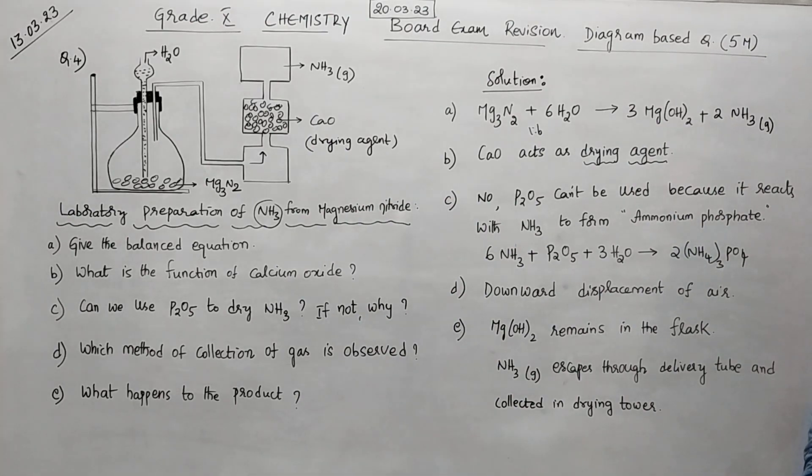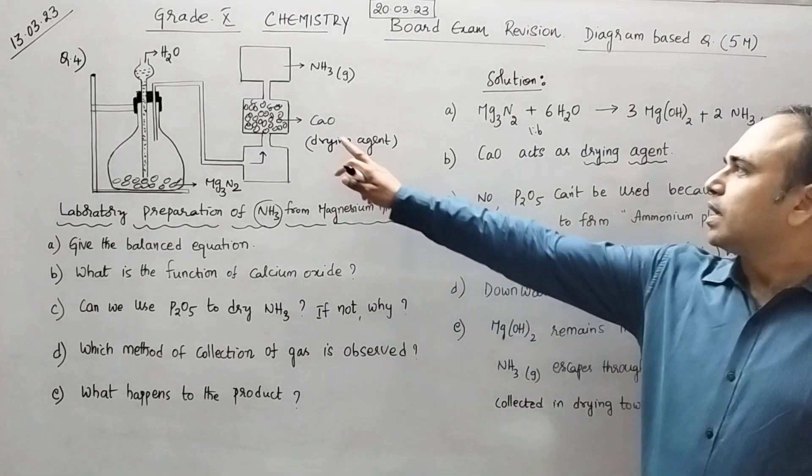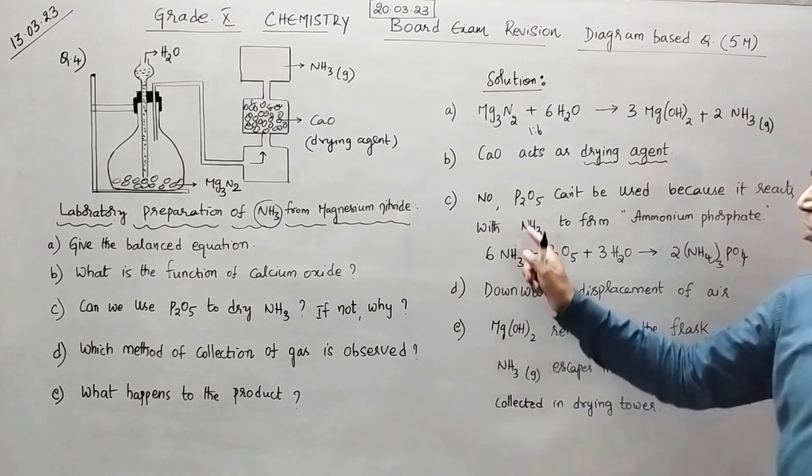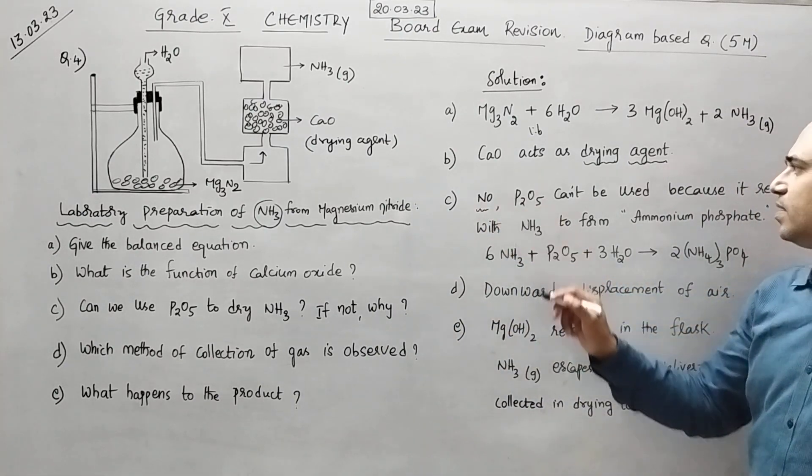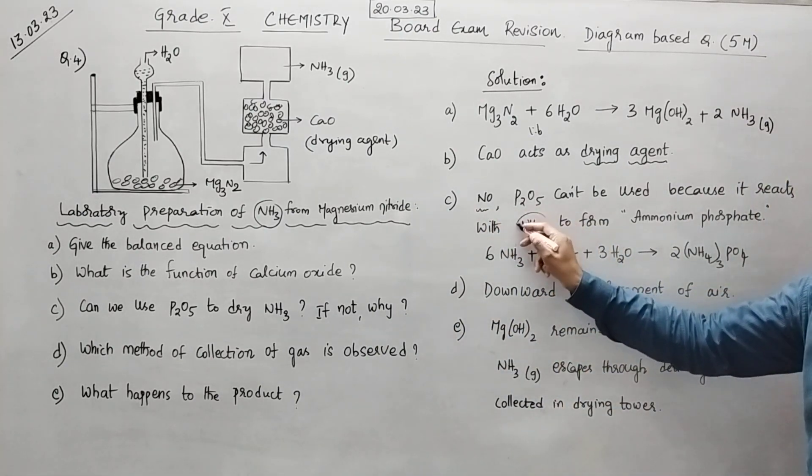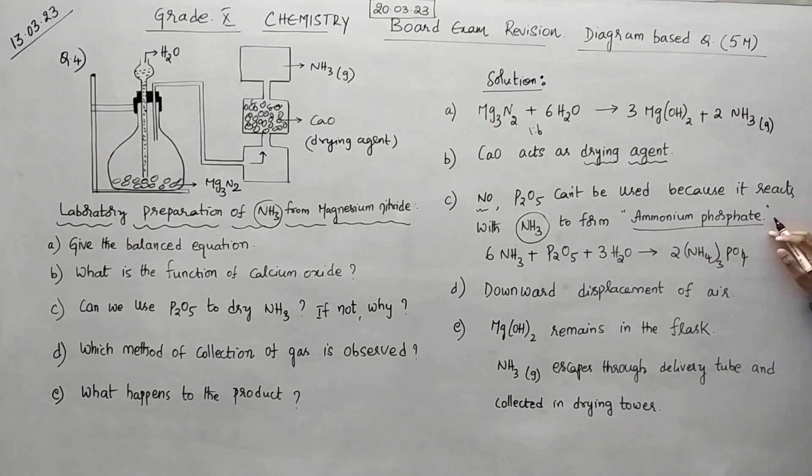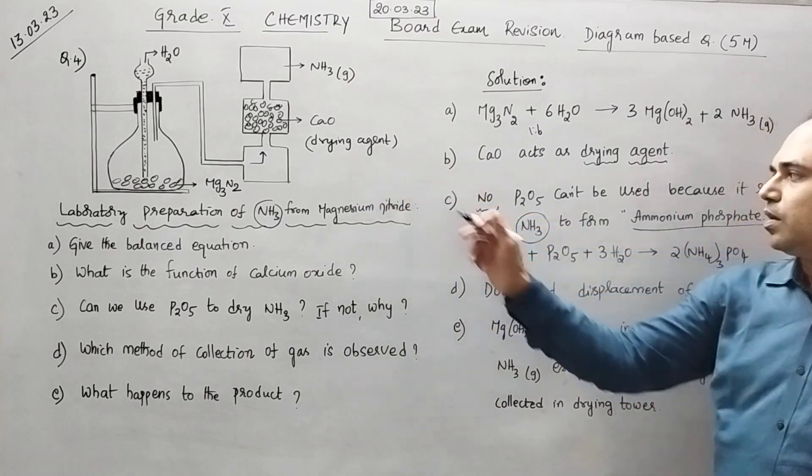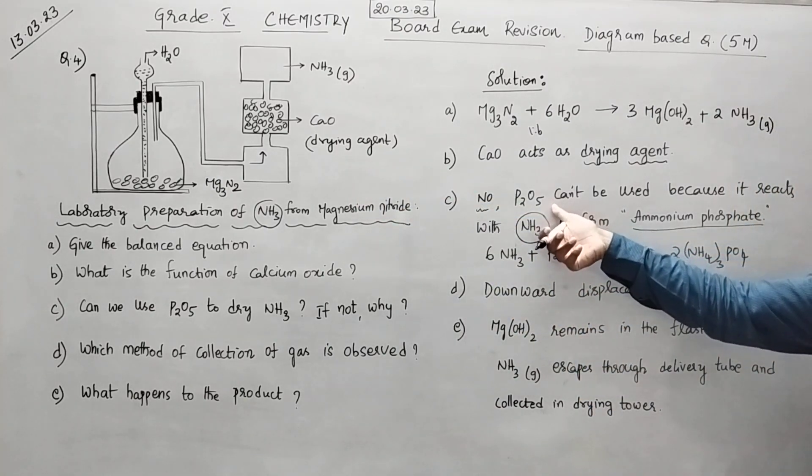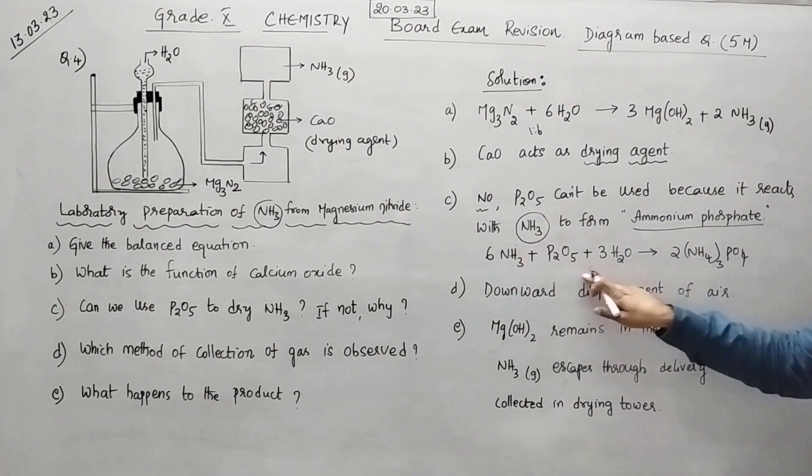Now can we use P2O5 instead of calcium oxide for drying. No. We should not use this. What is the reason. Because P2O5 will react with ammonia. And what is the product obtained. Ammonium phosphate. But calcium oxide does not react here. If you use P2O5 as drying agent, it will react. So this is your equation.